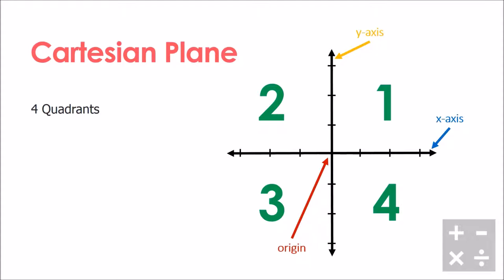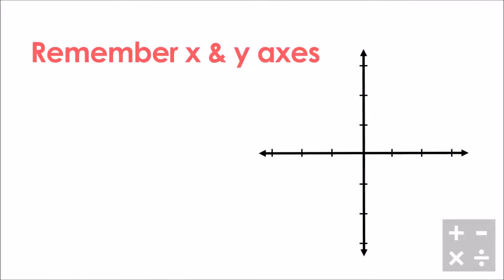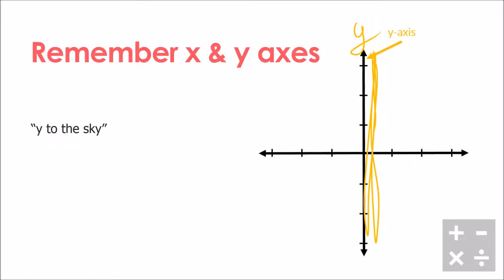What can be really tricky for a lot of students is remembering which axis is x and which axis is y. The way I try to remember it is: 'y to the sky' — when I think y to the sky, I'm going up and down, so I remember my y-axis goes up and down. For x, I remember that x's have two lines crossing each other, going all the way across left to right. Find whatever way works for you to remember which one is x and which one is y.